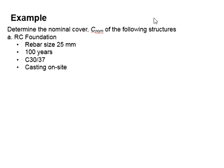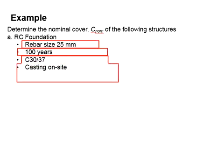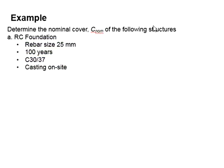Let us try an example to determine the nominal cover of an RC foundation. The foundation has a reinforcement bar size of 25 mm. It is designed for a 100-year lifespan. Its concrete grade is Grade 30 and it is cast on site. You may pause the video and try to solve it yourself.